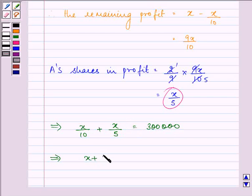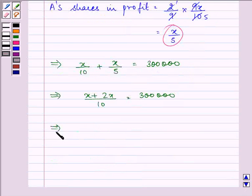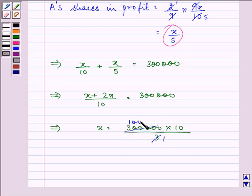This implies X upon 10 plus 2X upon 10 is equal to 3 lakh. This further implies X will be equal to 3 lakh into 10 divided by 3. So we have the total profit as rupees 10 lakh.